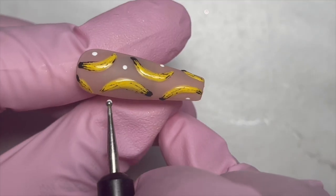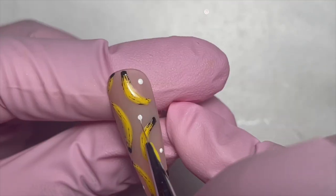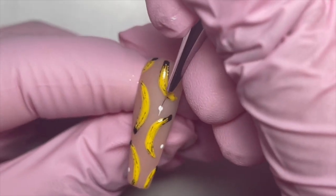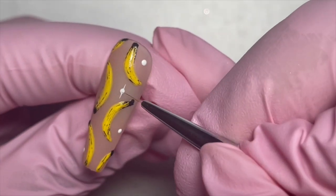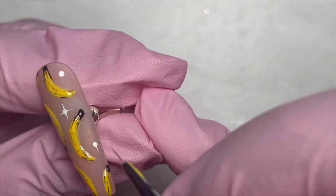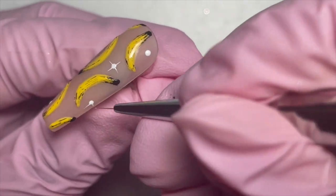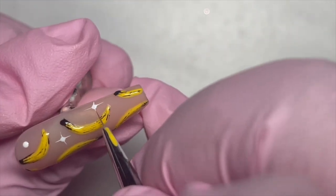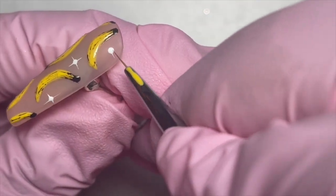That's the bananas complete. You guys know I love my stars, so I go ahead with white and put some dots scattered around the nail in between the bananas, then pull through and do my little stars. I really think it tied the set together - I love the contrast between the matte and the shiny.